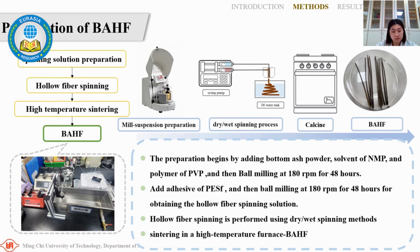The preparation of the biochar hollow fiber begins by adding biochar powder, a solvent of NMP, and a polymer of PVP, then stirring at 180 rpm for 48 hours. Then an adhesive of PSF is added, and stirring continues at 180 rpm for 48 hours to obtain the hollow fiber spinning solution.